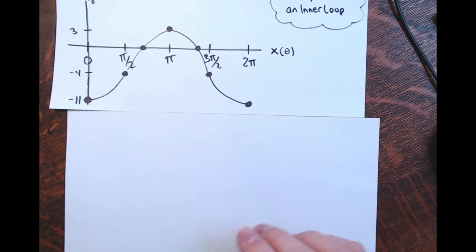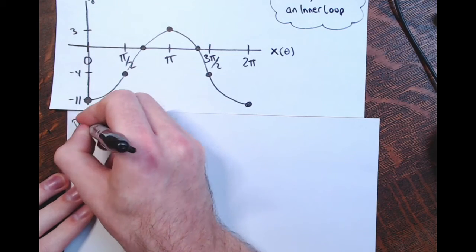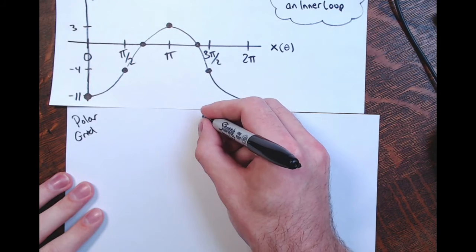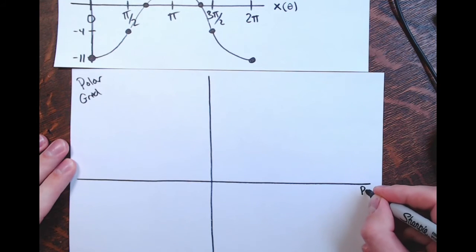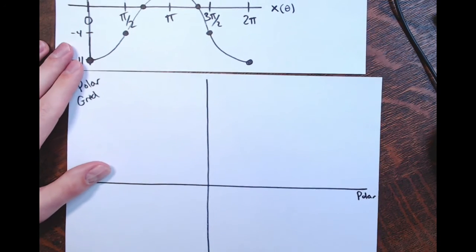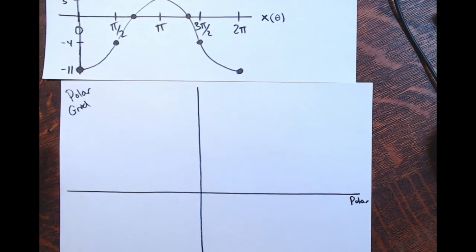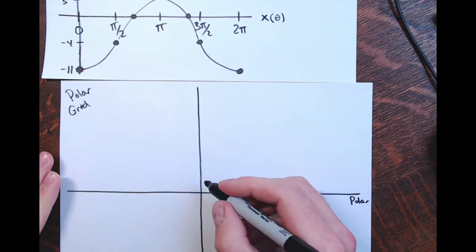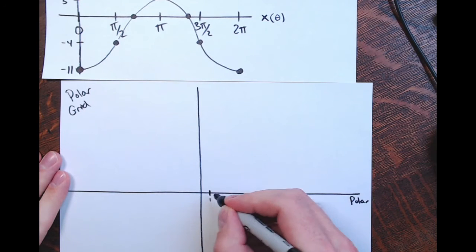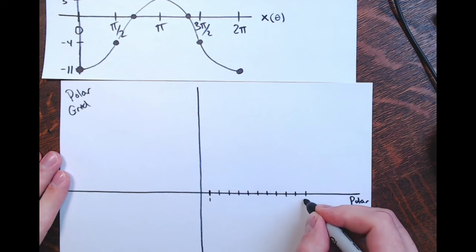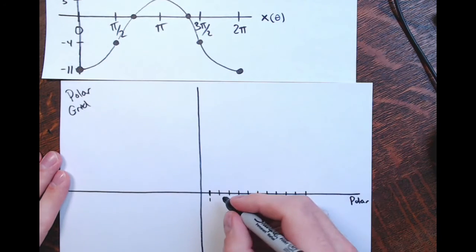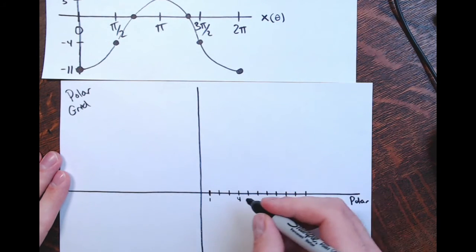I'm going to pull up and make a polar grid with a vertical and horizontal axis — this is the polar axis. The lowest value r gets is negative 11, so I'm going to go out to a circle with a radius of 11. I'll mark off circles at radii of 3, 4, and 11, and put in circles with radii of 1, 2, 3, 4, and 11.